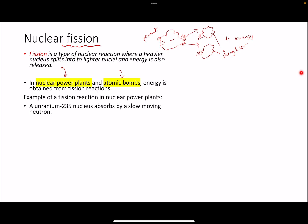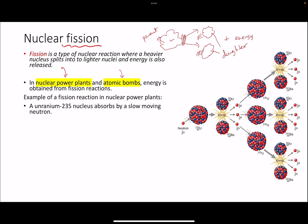Here is an example of a fission reaction that takes place in nuclear power plants. We have a slow-moving neutron, and it is absorbed by a uranium-235 nucleus — you basically bombard the neutron towards the uranium core. Uranium-235 on its own is quite stable, but when the neutron becomes embedded in the uranium nucleus, the uranium becomes unstable and undergoes nuclear fission, splitting into two nuclei — in this case barium-141 and krypton-92.